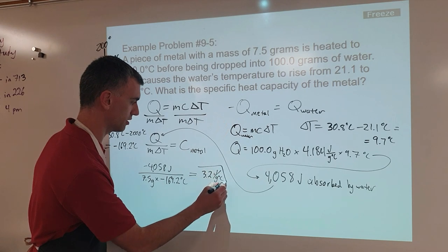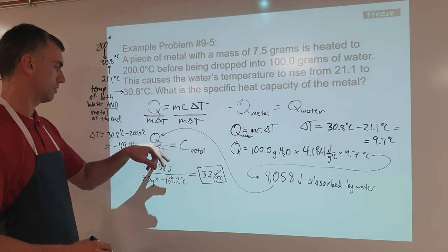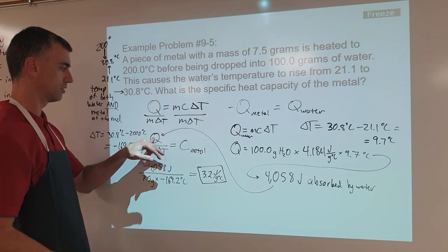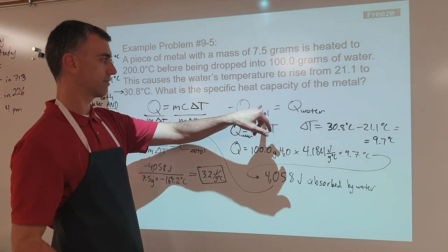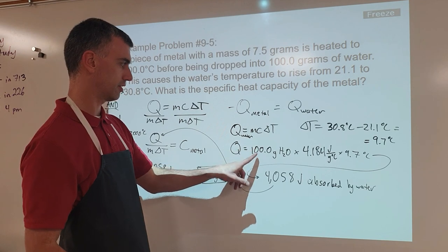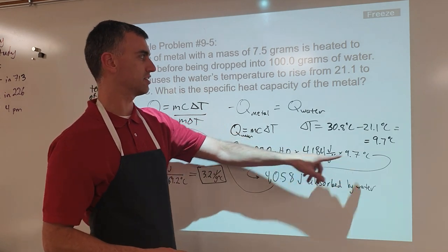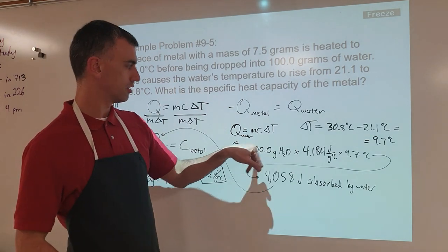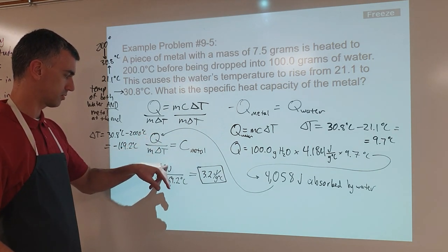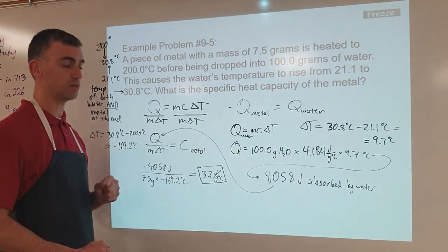Let's box the answer as we always should. The overview: q equals mcΔt, solve for specific heat capacity. We had the mass of the metal and the ΔT for the metal, but not q. So we said whatever the metal lost, the water must have gained. We solved for q for the water using its mass, the specific heat capacity of water from the reference chart, and its ΔT. That energy absorbed by the water equals the energy lost by the metal, giving us q for the metal equation. Combined with the mass and ΔT of the metal, that yields the specific heat capacity of the metal — 3.2 J/g°C.